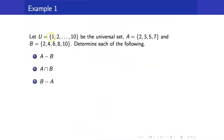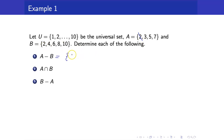Suppose that the universal set is the set of natural numbers from 1 to 10. A is the set {2, 3, 5, 7} and B is the set containing {2, 4, 6, 8, 10}. A minus B will be the elements of A that are not in B, so we just remove 2 because 2 is in B. So A minus B is {3, 5, 7}.